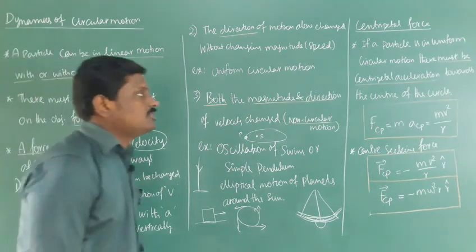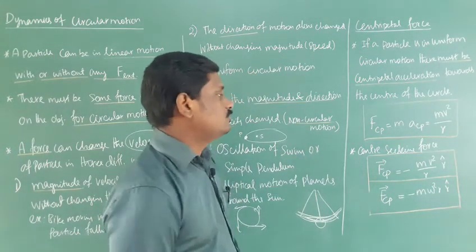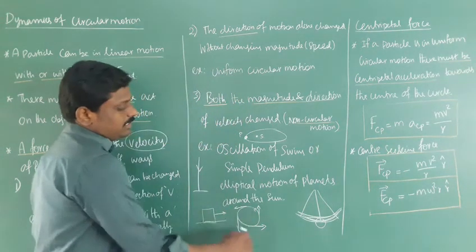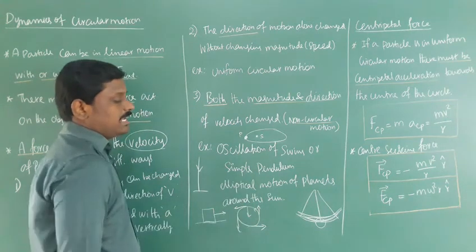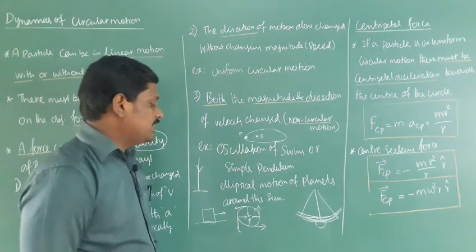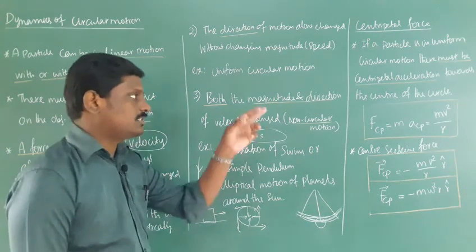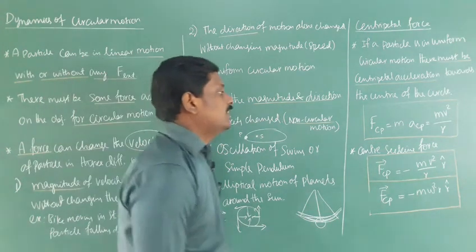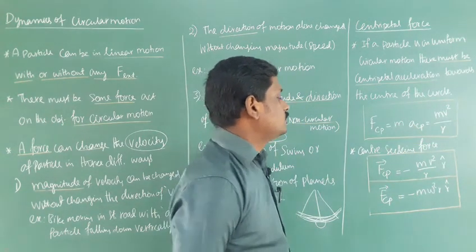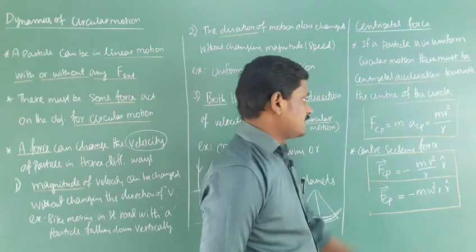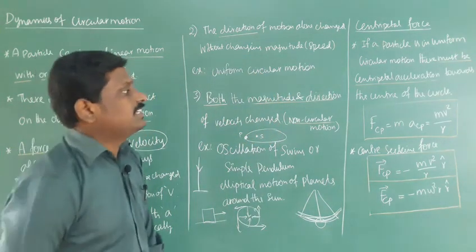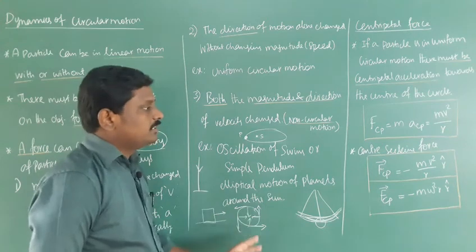For centripetal force: a particle in uniform circular motion must have a centripetal acceleration directed towards the center of the circle. As we have seen, if there is an acceleration there must be a force — that force is centripetal force. Using Newton's second law, force equals mass times acceleration. Substituting centripetal acceleration v²/r, we get centripetal force F = mv²/r. Centripetal force is also known as center-seeking force — it is a force acting towards the center.